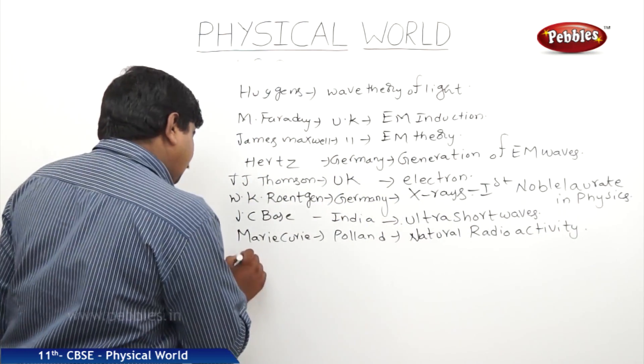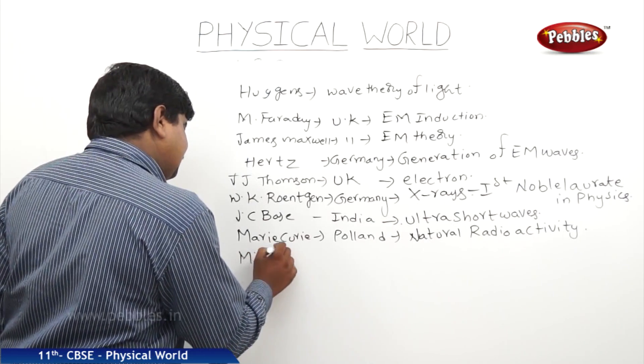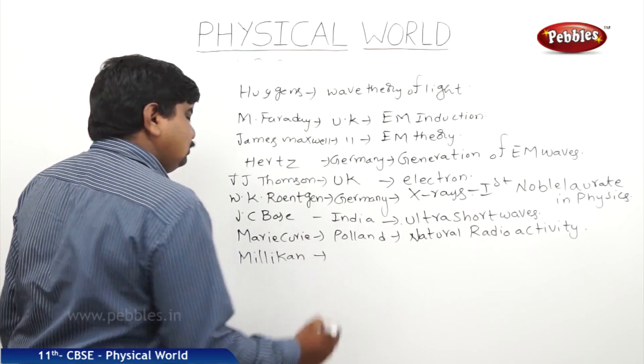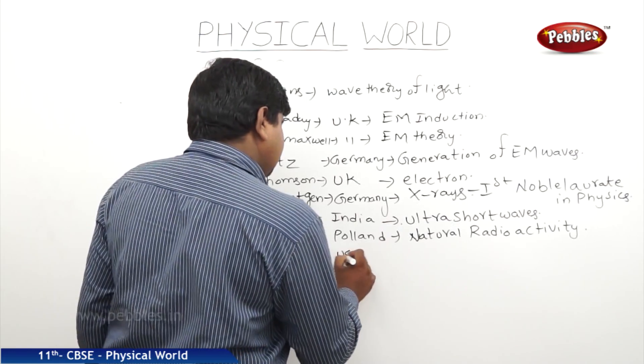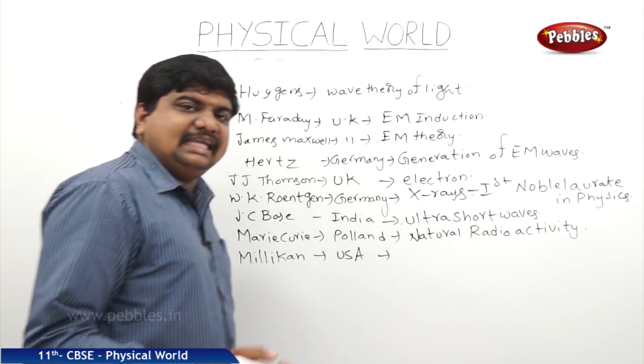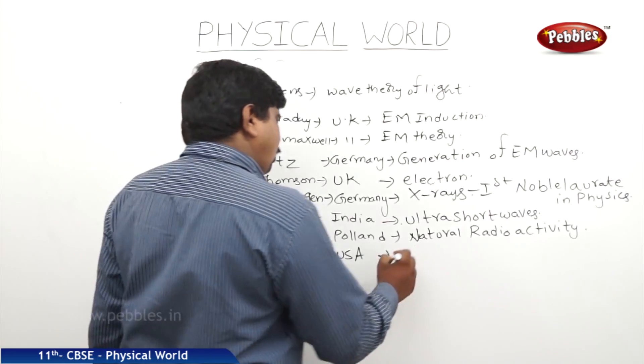Next one is Millikan, one of the great scientists, he is from USA, has discovered the charge of electron by his oil drop method.